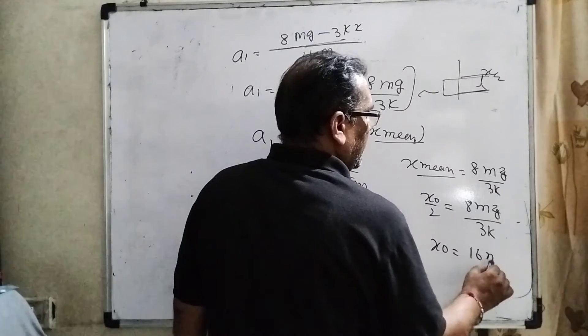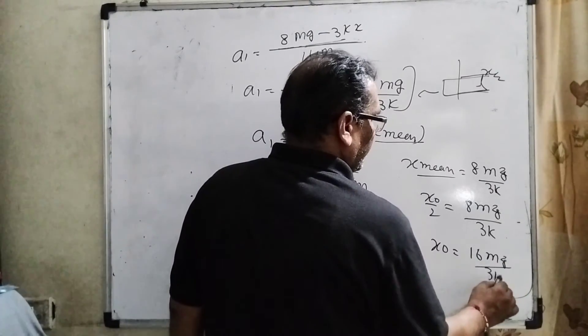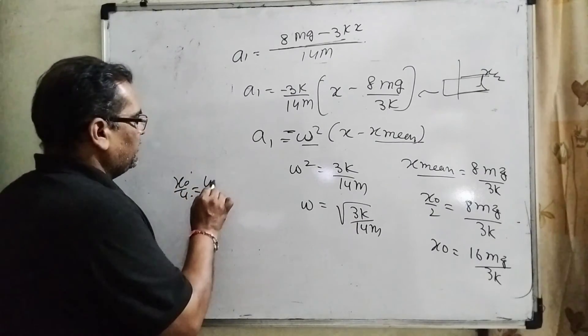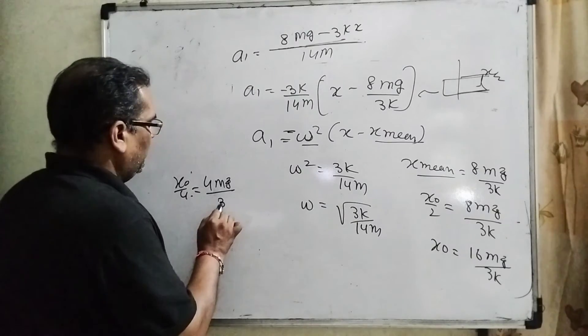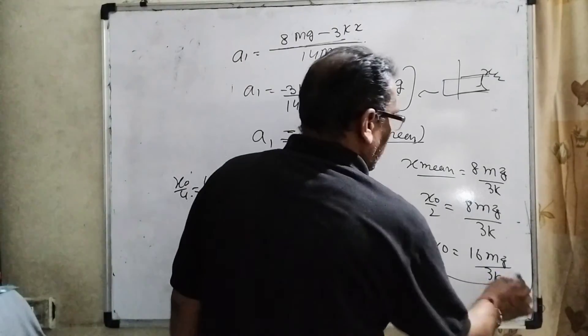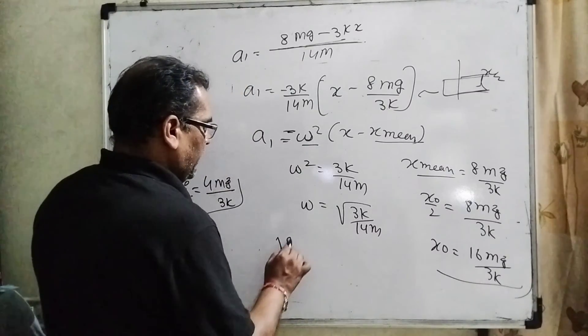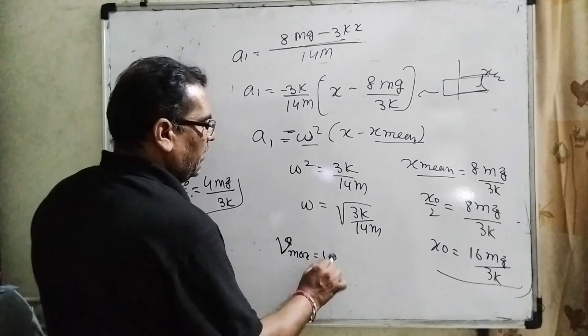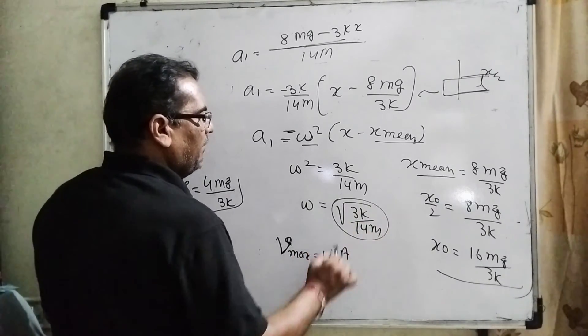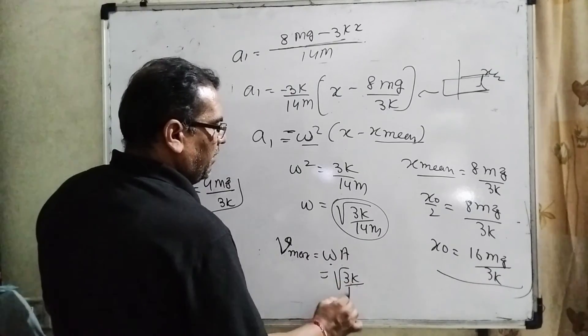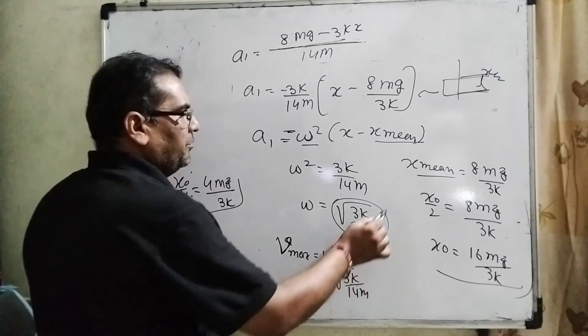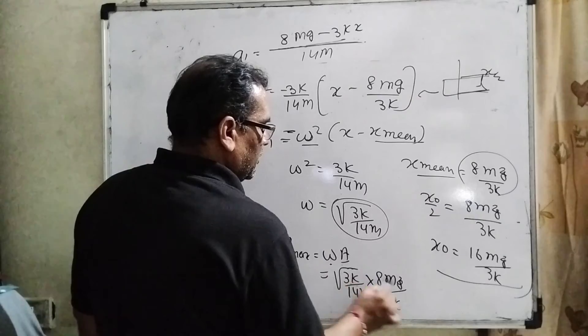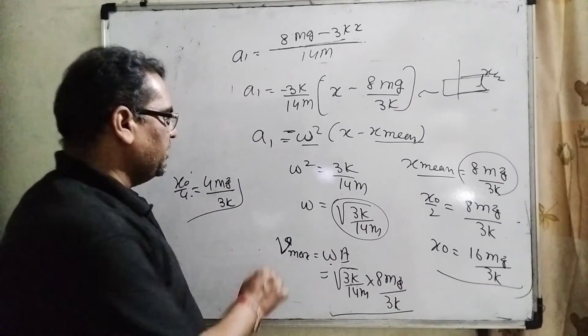But in the condition of x0/4, x0/4, then it can be written as 4mg/3k. So all these values are not matching with our any option. And last, you take a chance of the last only. V_maximum means velocity: ω × amplitude. What is ω? We have already found out this ω: √(3k/14m). And here the amplitude. Amplitude means mean position: 8mg/3k. So here no any options found. So I hope you understood all these problems. It is very conceptual and correlated to each other.